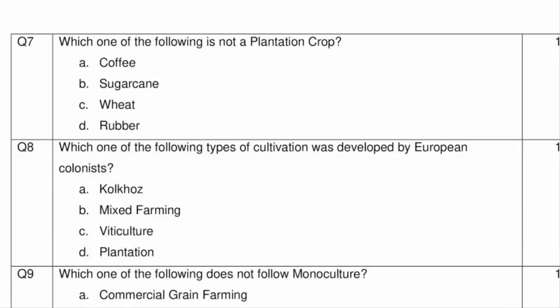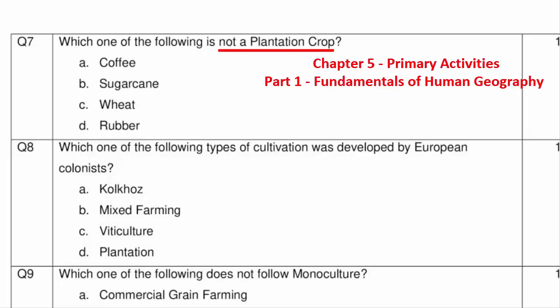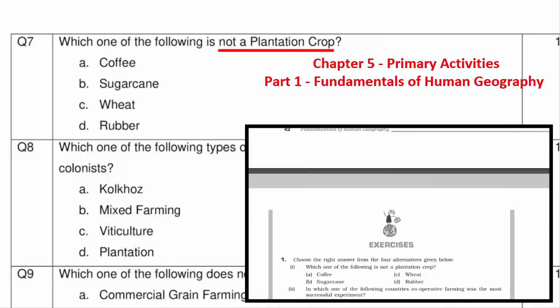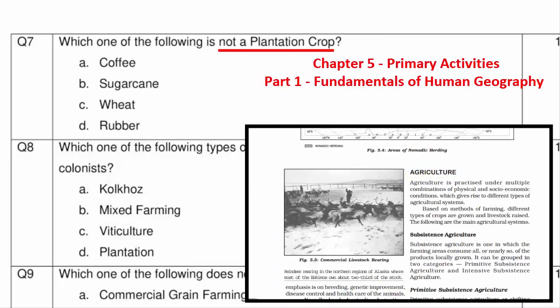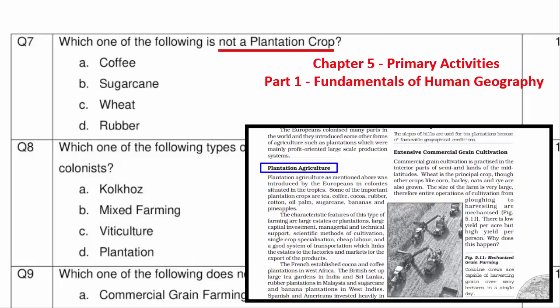Question 7 asks which one of the following is not a plantation crop. This is from Chapter 5 Primary Activities, Part 1 book. Under the subtopic plantation agriculture, plantation crops are those like coffee, sugar, and tobacco grown in large quantities. Looking at the options, Option C — wheat — is the odd one out because wheat is a grass, whereas coffee, sugarcane, and rubber are all plants grown at plantation scale.